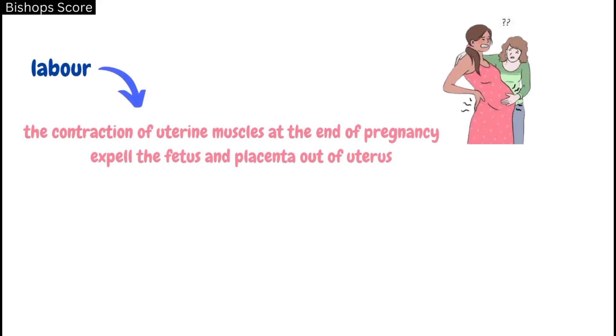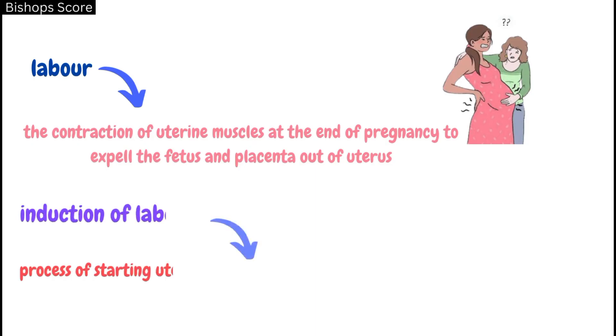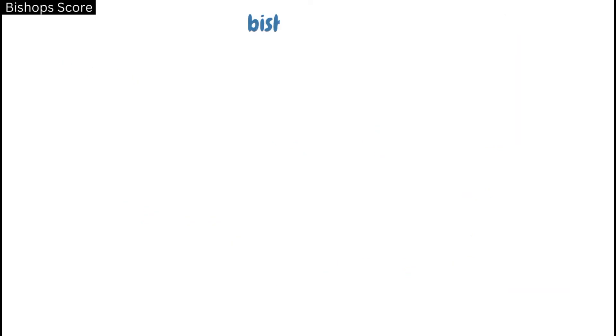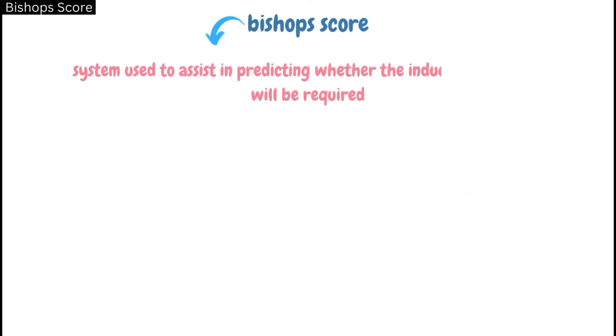In this video we will be talking about the Bishop's score. Before knowing about the Bishop's score, we need to know a little about the induction of labor. Labor, in simple terms, means the contraction of uterine muscles at the end of pregnancy to expel the fetus and placenta out of the uterus. The induction of labor is the process of starting uterine contractions artificially to bring about childbirth.